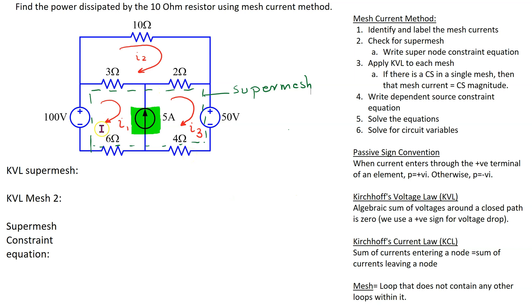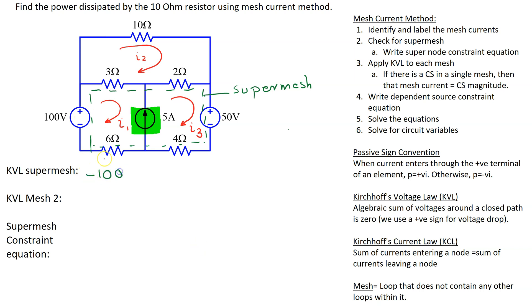We need to apply Kirchhoff's voltage law to this super mesh. Let's start at the 100-volt source. We can see that current i1 is entering the terminal marked minus and leaving the terminal marked plus. Going from minus to plus is a voltage rise, so we write this with a negative sign assuming passive sign convention. The first term is minus 100. Next we have the 3-ohm resistor, through which two currents i1 and i2 flow in opposite directions.